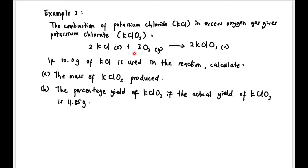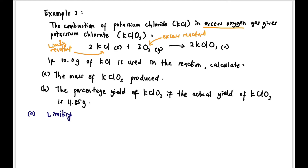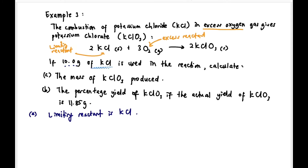Example 3: The combustion of potassium chloride KCl in excess oxygen gives potassium chlorate KClO₃. The equation is given. If 10 grams of KCl is used, calculate the mass of KClO₃ produced and the percentage yield if the actual yield of KClO₃ is 11.85 grams. Since excess oxygen is given, O₂ is excess and KCl is the limiting reactant.